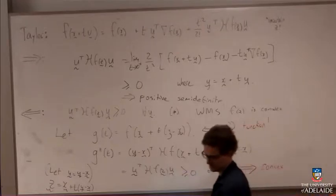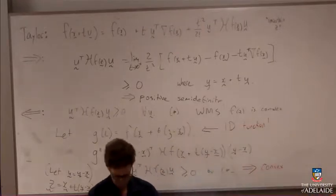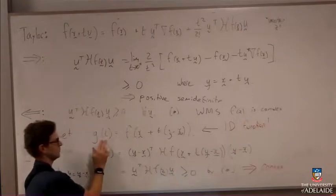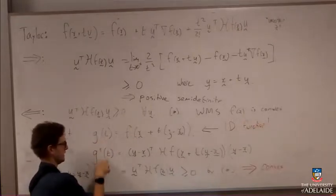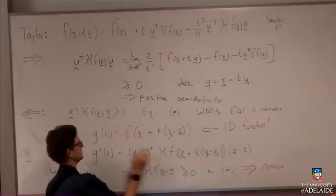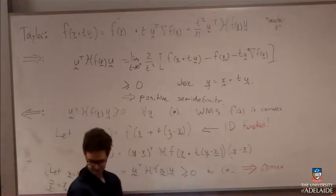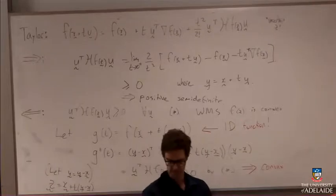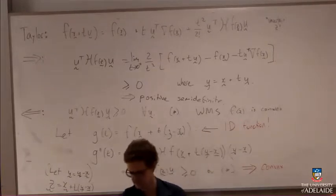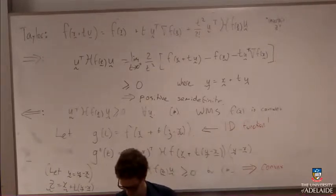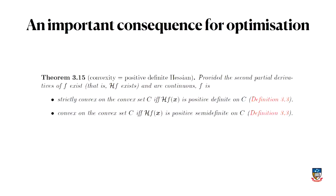And so we're actually done with that. So because by one variable calculus, this has shown that g is convex, that means that this object here is convex as well. So f is convex on this convex set c. Proved in both directions. Excellent. So that's our theorem.